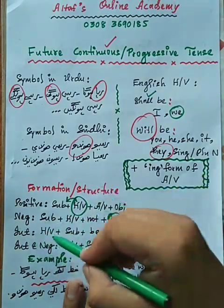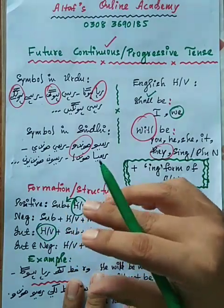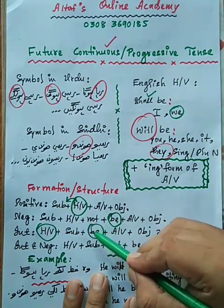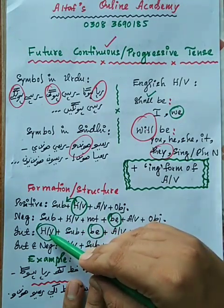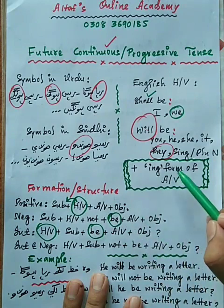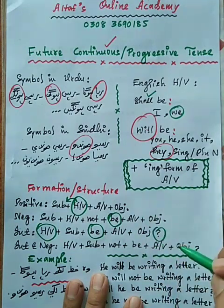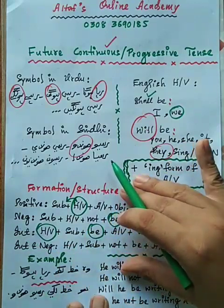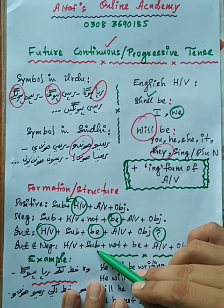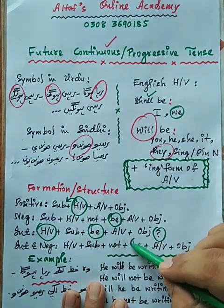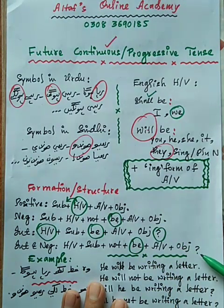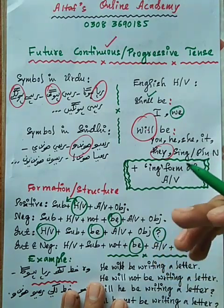For an interrogative sentence, first place the helping verb — shall or will depending on the subject — then the subject, then 'be' (which remains constant), then the action verb in -ing form, then the object, and finally a question mark. For an interrogative-negative sentence, the order is: helping verb, subject, not, be, action verb in -ing form, object, question mark.